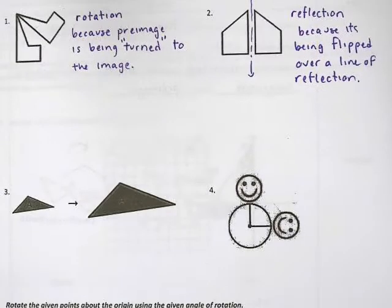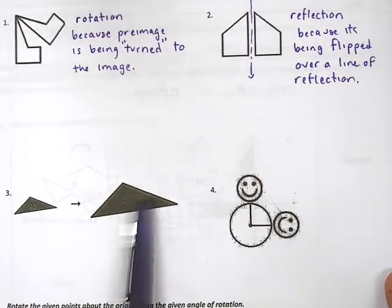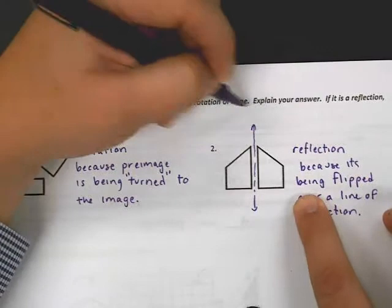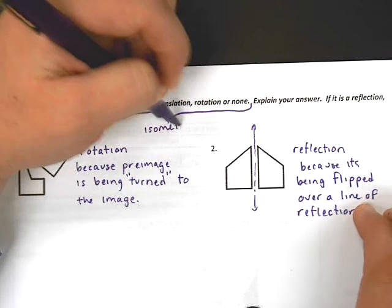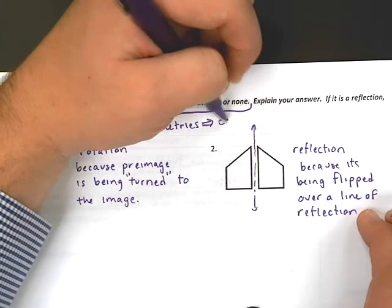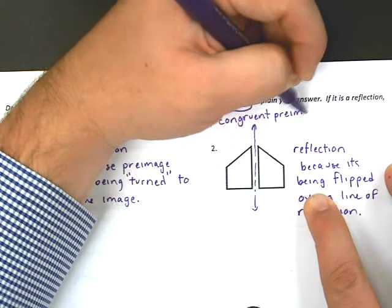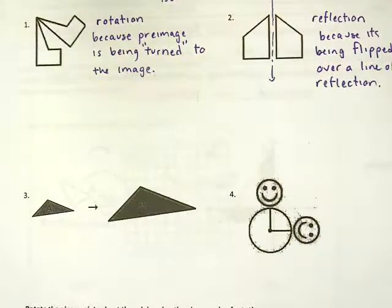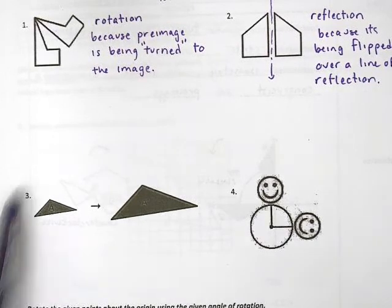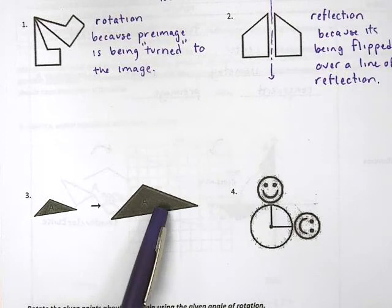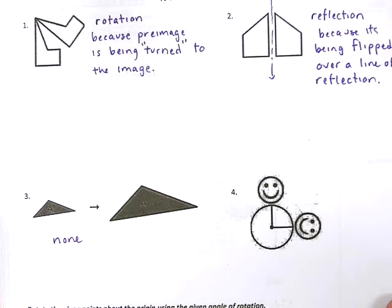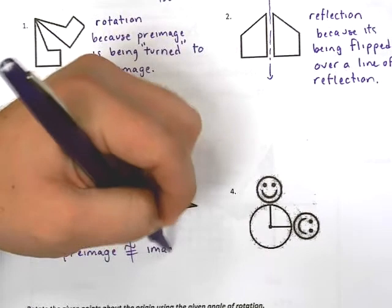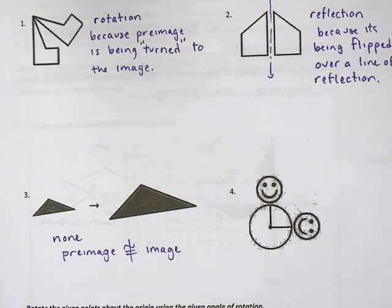Number three is a little bit different. It looks like it's sliding from here to here. But what's the problem? We said that all of these different transformations are isometries, or congruent pre-image and image. So what's the problem with this picture in number three? Hopefully you guys agree. These are completely different sizes. This is smaller, this is bigger. This is not an isometry. This pre-image is not congruent to the image. So this is none. And we can say pre-image is not congruent to the image.